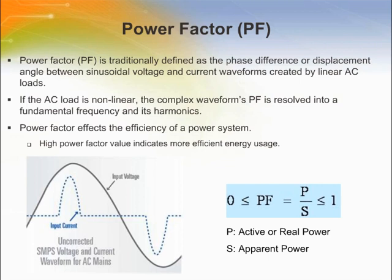Traditionally, power factor is defined as the phase difference or displacement angle between sinusoidal voltage and current waveforms created by linear AC loads. But it is only valid when there is an ideal sinusoidal signal for both current and voltage waveforms. In practice, most offline power supplies draw a non-sinusoidal current. Switch mode power supplies are a good example — they conduct current in a short pulse that is in phase with the line voltage but is not a pure sine wave, creating linear harmonics.